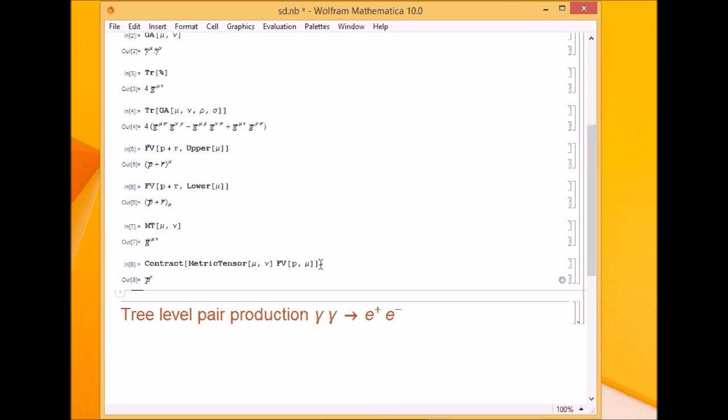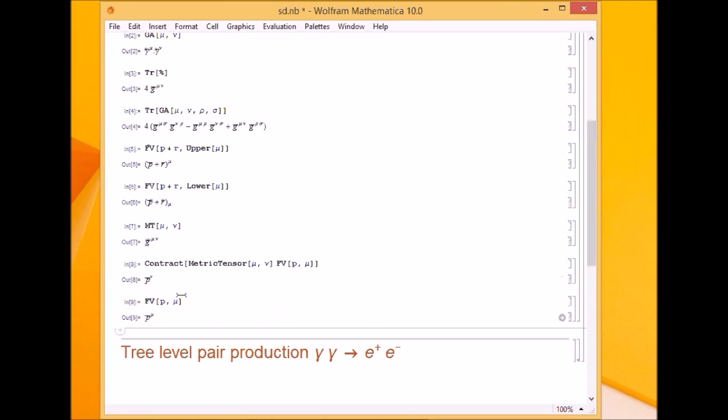You might think if everything is upper, what will contract? It shouldn't contract. But the Contract command doesn't look at contraction as covariant or contravariant. When it sees an index being repeated, it just replaces it with the new index. Contract doesn't care whether it's upper or lower. When I did that, it gave me p_nu.